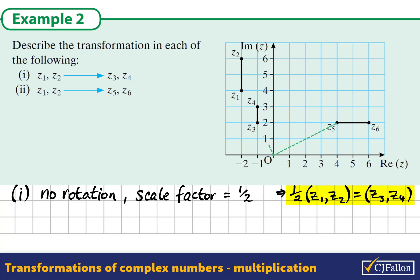Let's look at Z1 and Z5. We can see that there are different arguments for each of these complex numbers. So there must be a rotation that maps Z1 onto Z5. There is a rotation involved because the arguments are different.